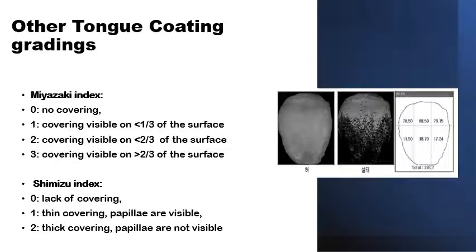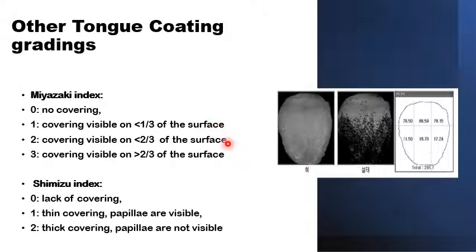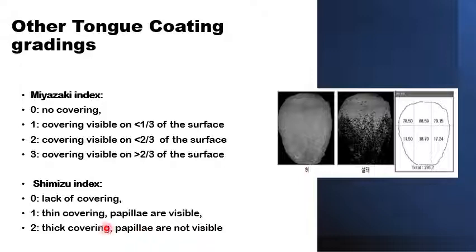Two other coating scoring systems were developed. One was suggested by Miyazaki, which is a four-point scoring system: zero is no coating, one is coating covering less than one third of the dorsum, two is between one third and two thirds, and three is heavy coating covering more than two thirds of the dorsum of the tongue. The Shimsi index has a three-point scoring system: zero is lack of coating, one is thin coating where you can still see the papilla of the tongue, and two is thick coating where you cannot identify the papilla on the dorsum of the tongue.